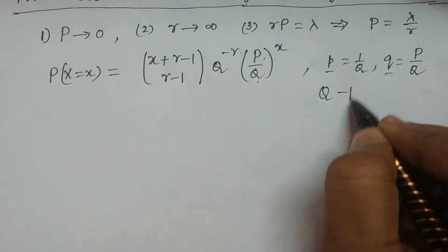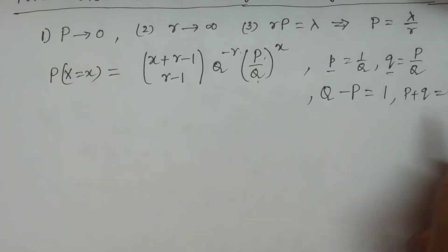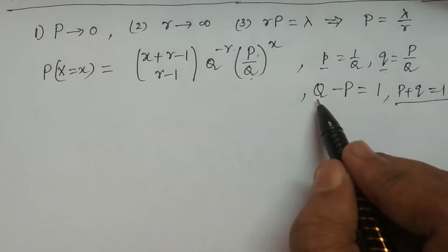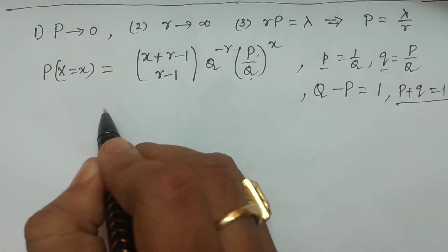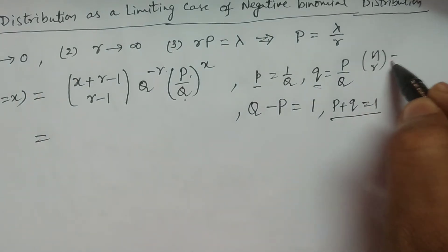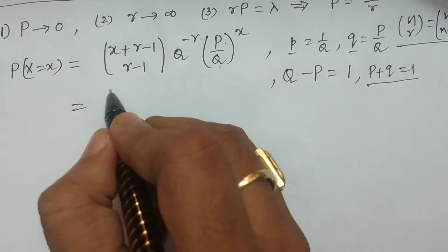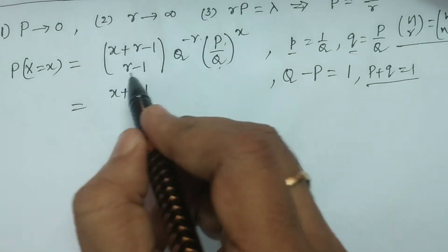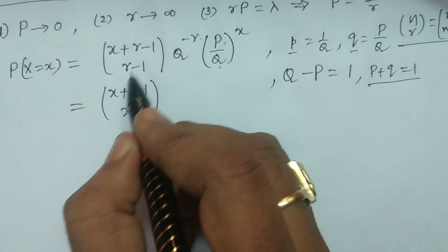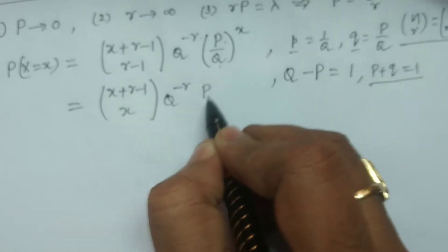Also note that q minus p equals 1, which comes from p plus q equals 1, so q equals 1 plus p. Using the identity nCr = nC(n−r), we can rewrite (x + r − 1) C (r − 1) as (x + r − 1) C x. Converting q in terms of p: q = 1 + p, so the PMF becomes (x + r − 1) C x, times (1 + p)^(−r), times (p/(1 + p))^x.